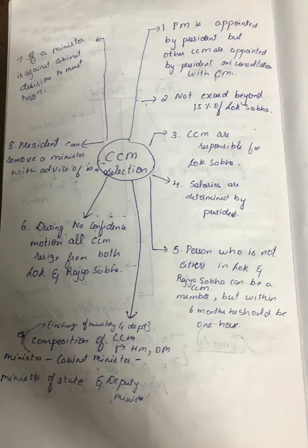Now let's go to the selection of the Central Council of Ministers. The prime minister is appointed by the president, but other CCM members are appointed by the president on the consultation with the prime minister. If you understand this properly, the same replica happens for your state council of ministers too.